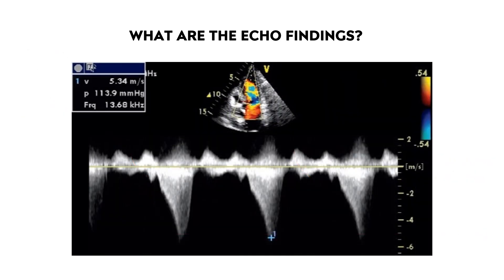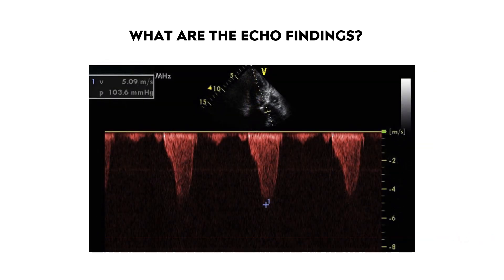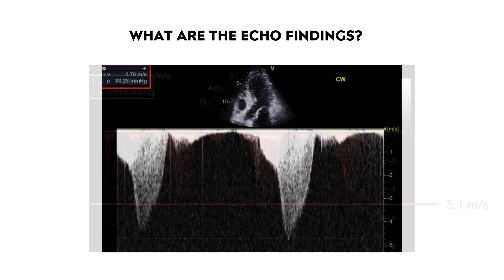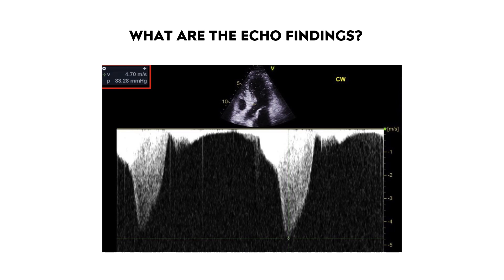Here are additional examples of LVOTO. The first shows a dagger-shaped appearance with a peak velocity of 5.3 meters per second — a severe obstruction. Another example again shows the dagger-shaped Doppler tracing with a peak velocity of 5.1 meters per second. The last example has a dagger-shaped appearance with a peak velocity of 4.7 meters per second — again, a severe obstruction.